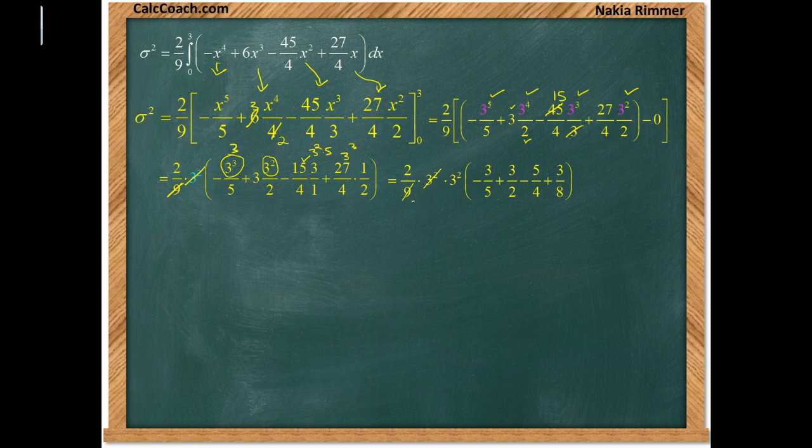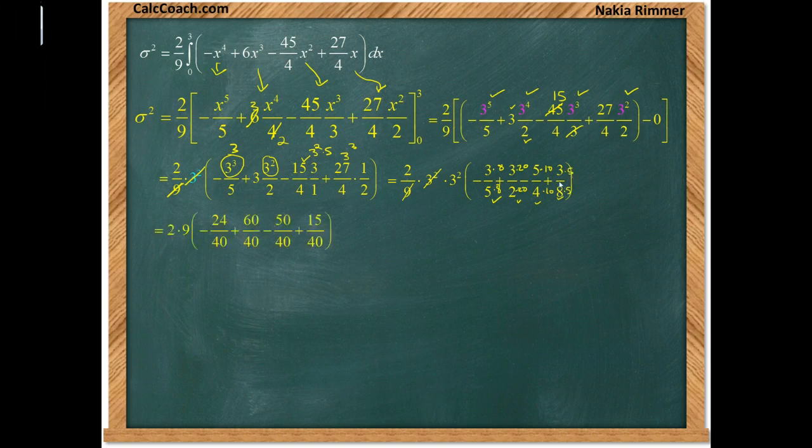So these things help you along the way. You don't have to do them, but without a calculator they make your life a little easier. The common denominator between an 8, a 4, a 2 and a 5 is going to be 40. So the 5 needs to be multiplied by 8, the 2 needs to be multiplied by 20, the 4 needs to be multiplied by 10, and the 8 needs to be multiplied by 5, giving us negative 24, positive 60, negative 50, and positive 15.